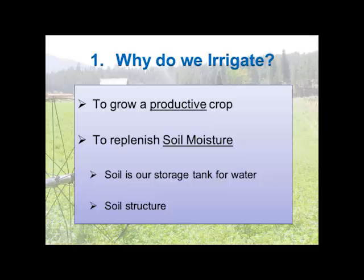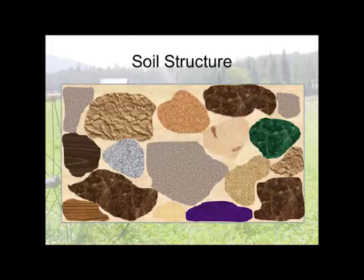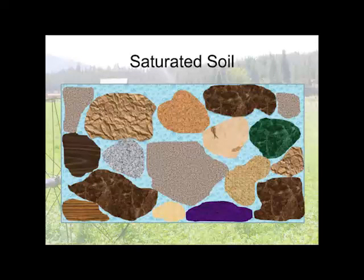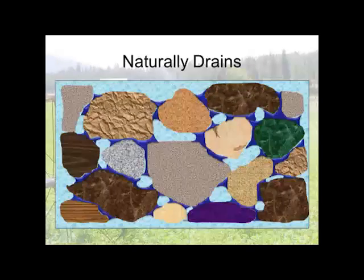We need to know a little bit about soil and soil structure. We're going to talk about sprinklers and drip systems — both rely on soils equally importantly. Soils are usually made up of organics and minerals, different kinds of texture. When we have a saturated soil, there's no air in the soil — there's soil particles in water — not a very good situation for growing a crop.